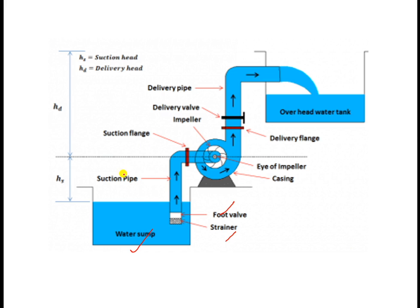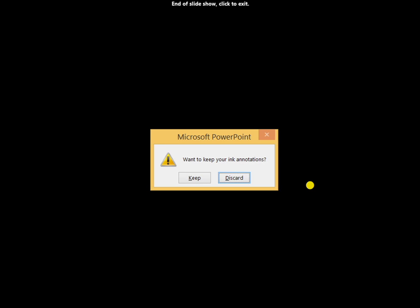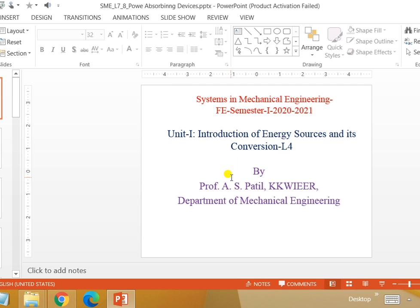In this setup, the suction pipe connects from the water sump to the eye of the impeller via a suction flange. The outlet of the pump connects to the delivery pipe. The foot valve and strainer are again shown here. This completes the working of the centrifugal pump. In the next lecture we are going to see the next power absorbing device.